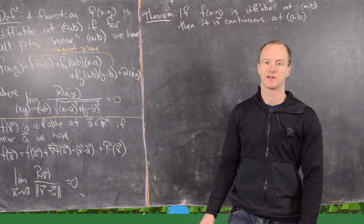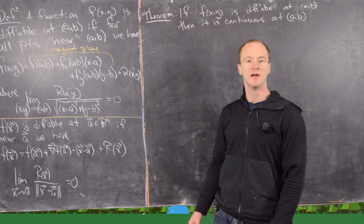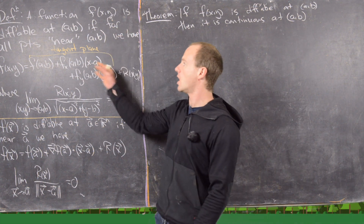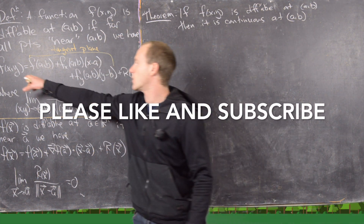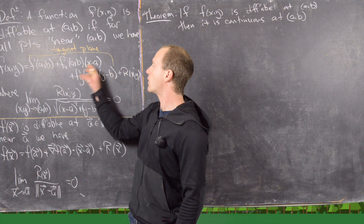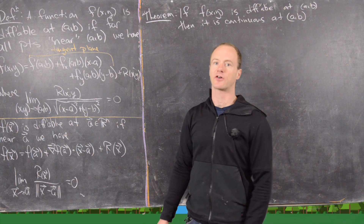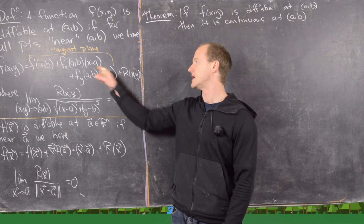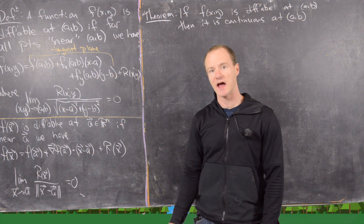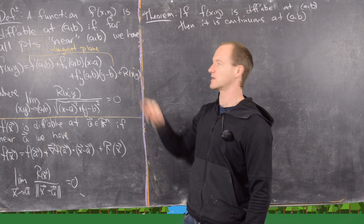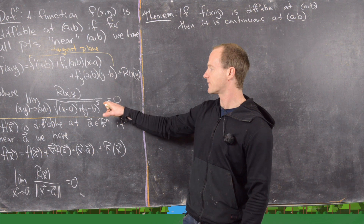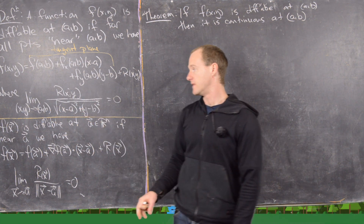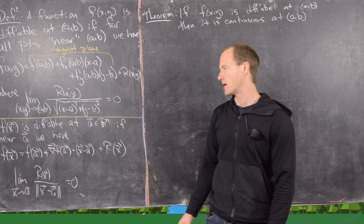In this video we're going to look at some results involving differentiability and continuity. A function is called differentiable at (a,b) if for all points near (a,b), f(x,y) equals the equation of the tangent plane — the linear approximation of f at (a,b) — which is f(a,b) plus the partial with respect to x evaluated at (a,b) times (x−a), plus the partial with respect to y evaluated at (a,b) times (y−b), plus some remainder function. That remainder function has the property that the limit as (x,y) goes to (a,b) of the remainder over √((x−a)²+(y−b)²) is zero.